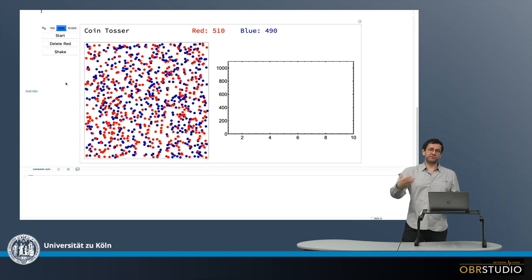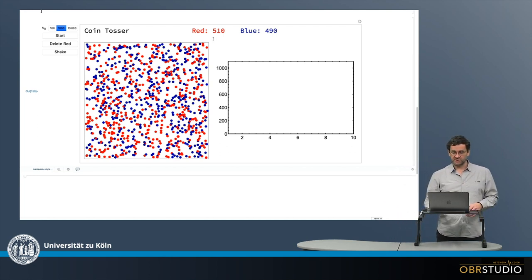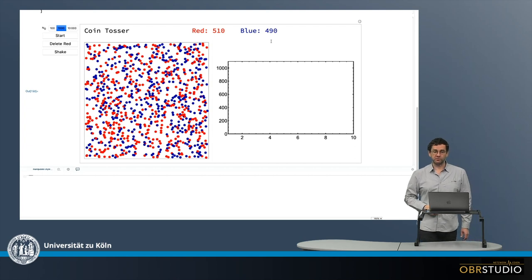Initially you throw a thousand coins on this table and then by pure chance about half of the coins will be red and the other half will be blue. This is what we see above here now. Statistically there are in this case 510 red and 490 blue. So this is sort of a coin tosser here.